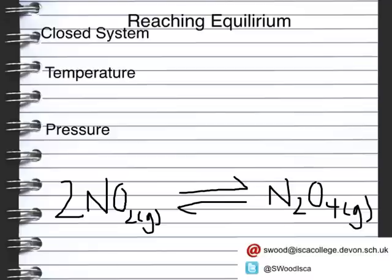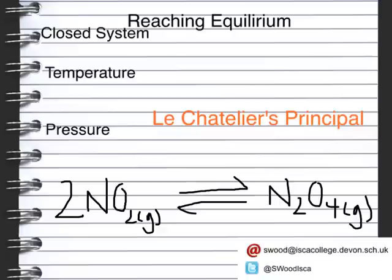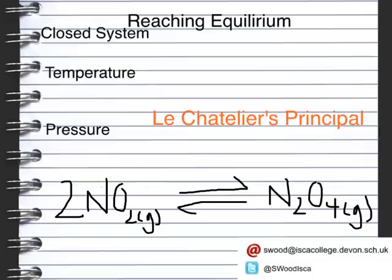All of these ways to change our equilibrium — changing the temperature, changing the pressure, changing the concentration — are all examples of Le Chatelier's principle. He says: increasing the temperature favours the endothermic reaction; decreasing the temperature favours the exothermic. Increasing the pressure favours the side of the reaction with the fewer molecules or moles. Increasing the reactants and decreasing the products favours the forward reaction, while decreasing the reactants and increasing the products favours the backwards reaction.